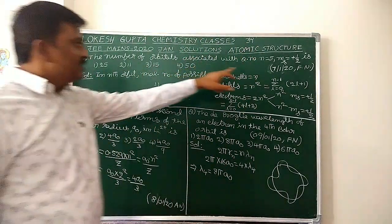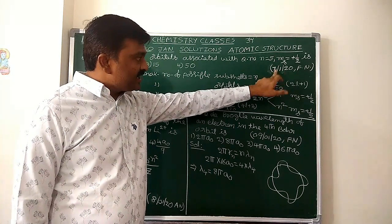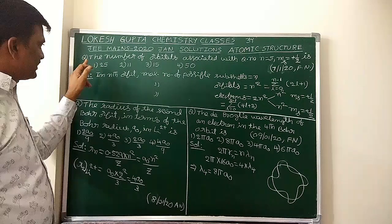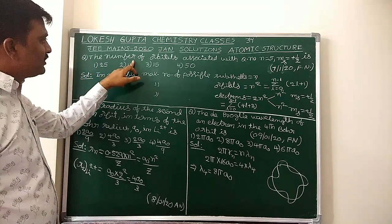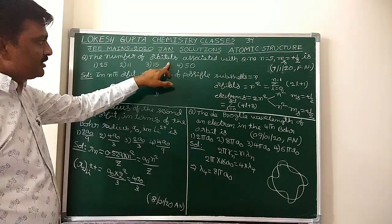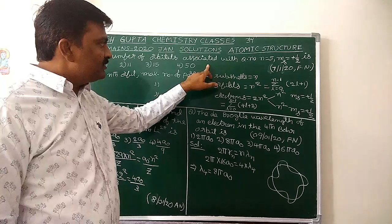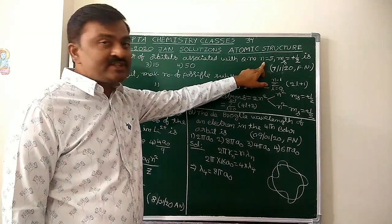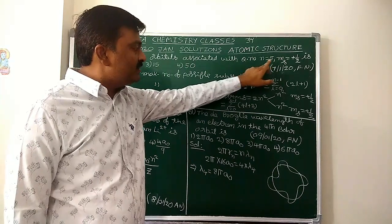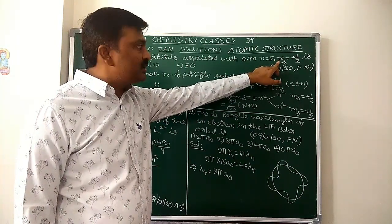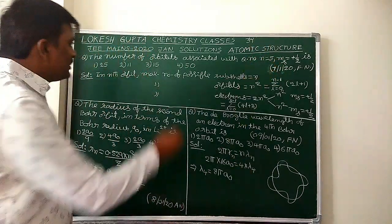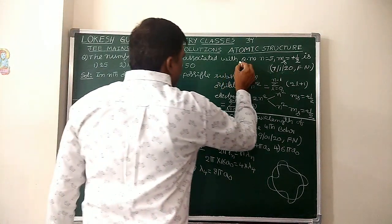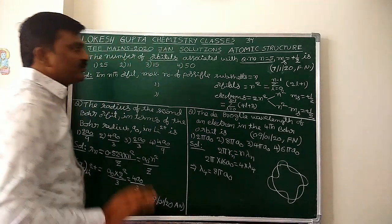First question, given in January 7th. The number of orbitals associated with the quantum numbers n equal to 5 (principal quantum number n = 5) and ms (spin quantum number) equal to plus half. What they want: number of orbitals with the quantum number n equal to 5.